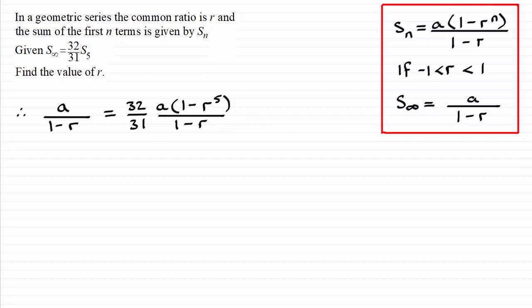Now I can see that we have a common factor here in both terms, a, so I can divide both sides by a. And also I can see that if I multiply both sides by one minus r, then that one minus r is going to cancel with that one minus r. So that greatly simplifies it.